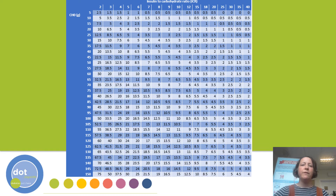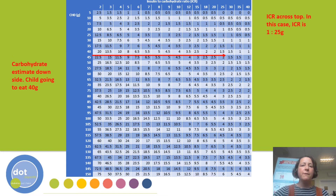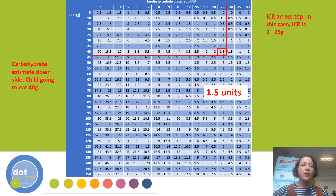Let's look at one final example of using this ready reckoner table. The child is going to eat 40 grams of carbohydrate and has an ICR of 1 unit for 25 grams. Reading across from 40 and down from 25, the table advises a dose of 1.5 units. So the correct dose of insulin for this situation to cover the carbohydrate would be 1.5 units.